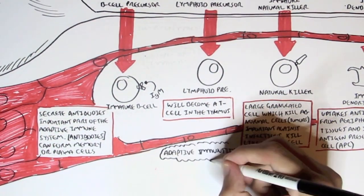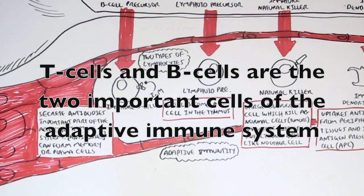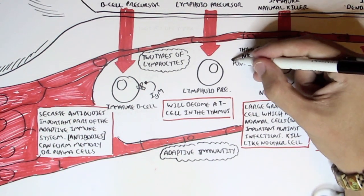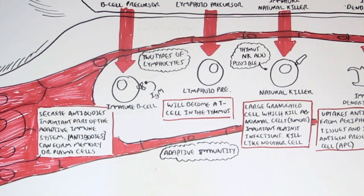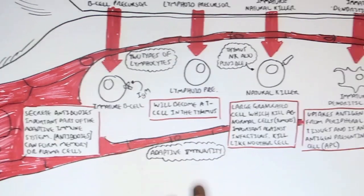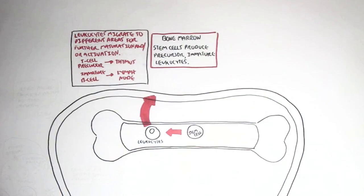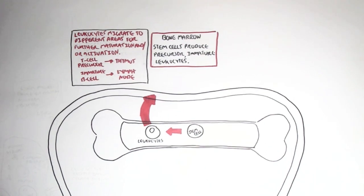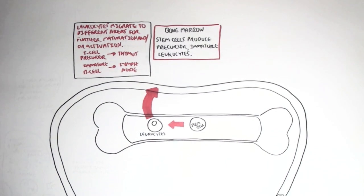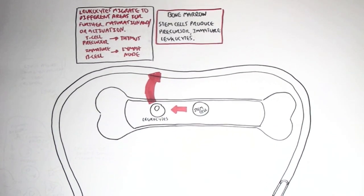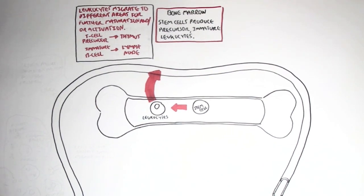T cells and B cells are the two important lymphocytes that are part of the adaptive immune system. Interestingly, natural killer cells can arise not only from the bone marrow but also from the thymus via the lymphoid precursor cell. Looking back at the overview diagram, we learned how stem cells produce many types of leukocytes — precursor and immature ones — that go into the bloodstream and travel to different tissues. In part 2, we will look at where some of these immune cells travel to and learn about other organs which are part of the immune and lymphatic systems.